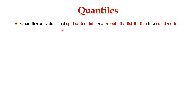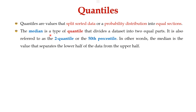Quantiles are values that split sorted data or a probability distribution into equal sections. The median is the type of quantile that divides a data set into two equal parts. It is also referred to as the two-quantile or 50th percentile. In other words, the median is a value that separates the lower half of the data from the upper half.